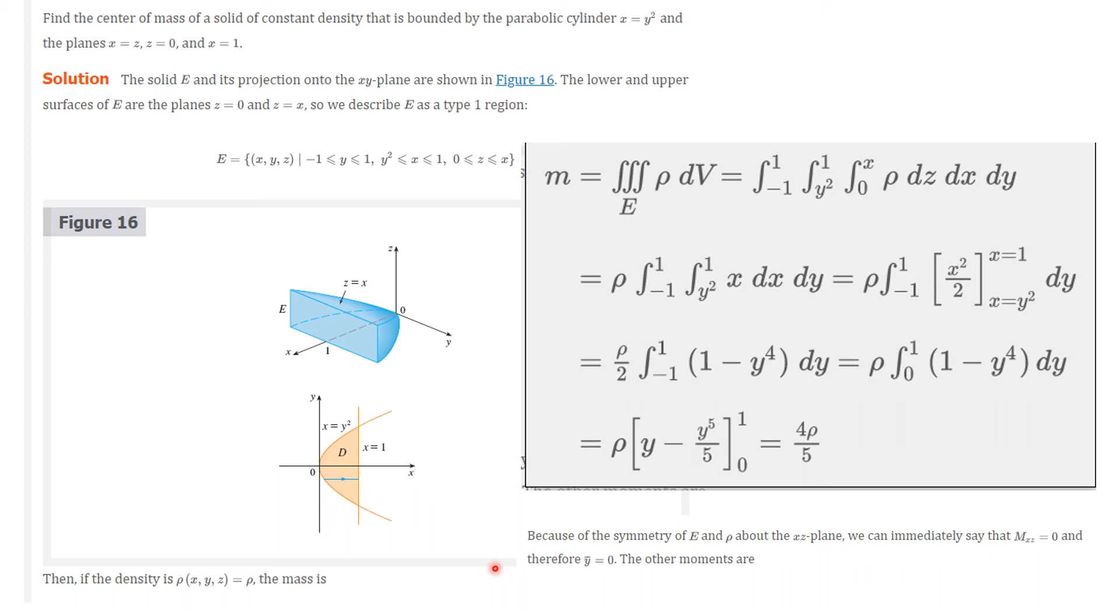Now, because of the symmetry of E and rho, both are symmetric with respect to the xz plane, we know that that moment is equal to 0. And so y bar, in fact, is going to be equal to 0. But we'll calculate the other moments.